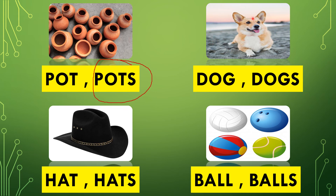What is this, children? Dog, isn't it? How many dogs — one or many? One. So which one will we circle — with S or no S? No S. Why? Because only one dog. Our correct answer is D-O-G, dog. We will circle the correct answer. Now let us see the next picture.